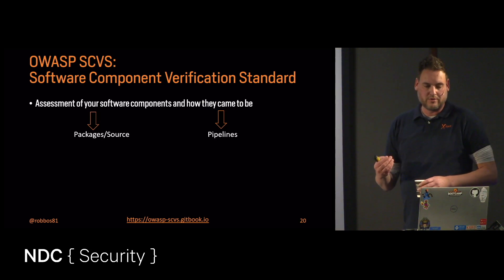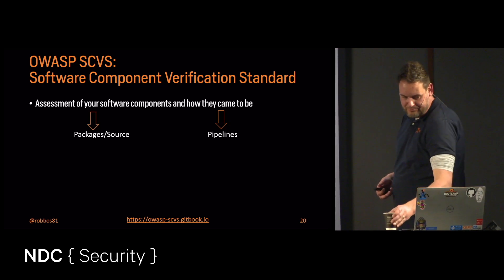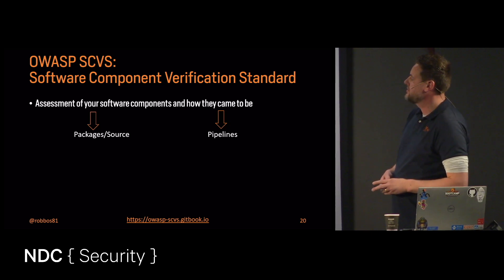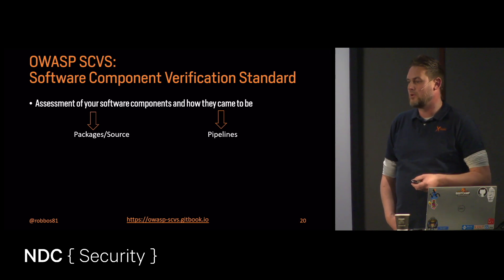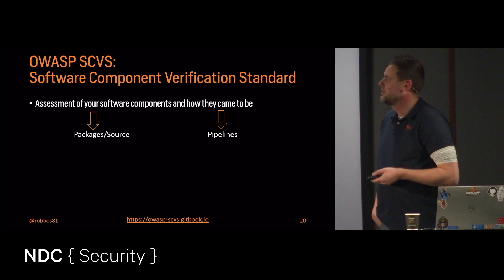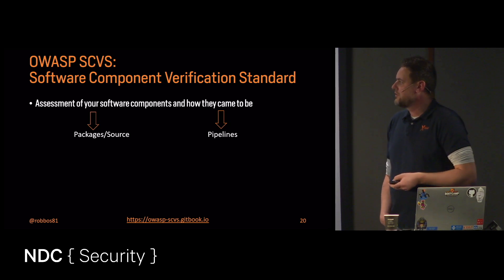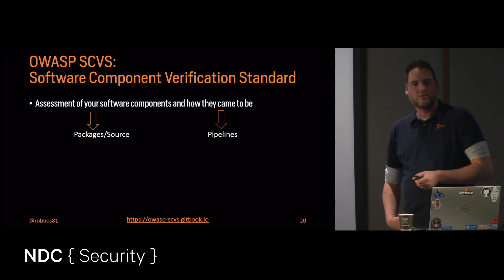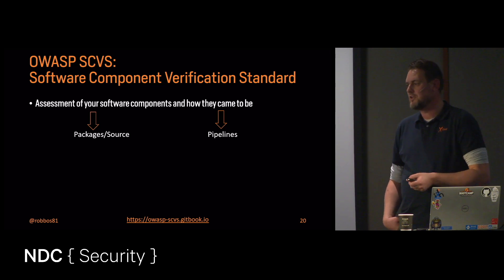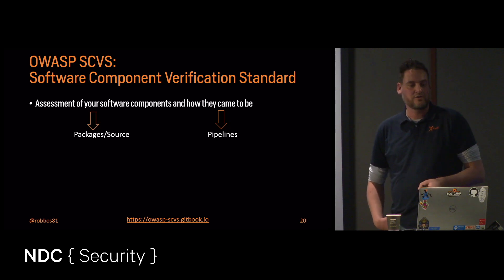The SCVS covers the full supply chain: assessing software components, Software Composition Analysis, how they came to be, which pipelines created them. This is especially relevant given last year's US executive order, which said: if you want to deliver software to US government agencies, you need to tell us which components are in your software. Microsoft, Oracle, and others all of a sudden needed to produce a verifiable software composition analysis of everything they deliver.